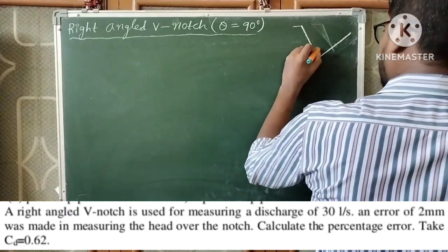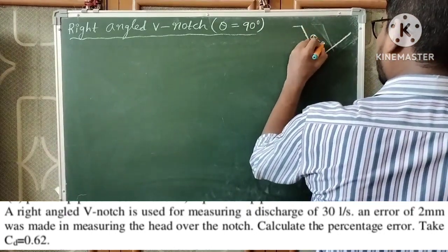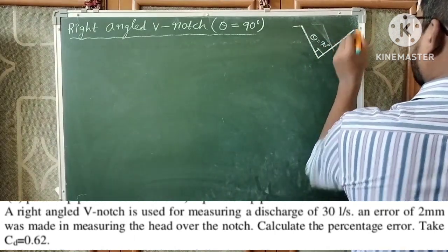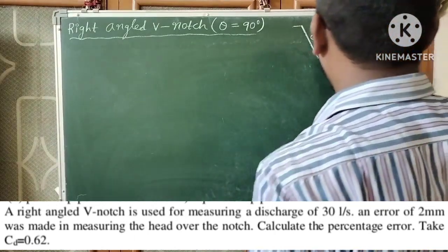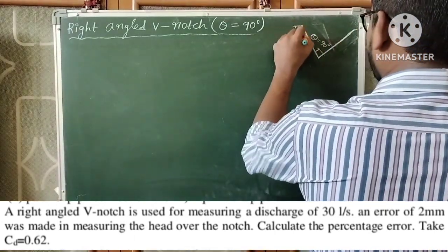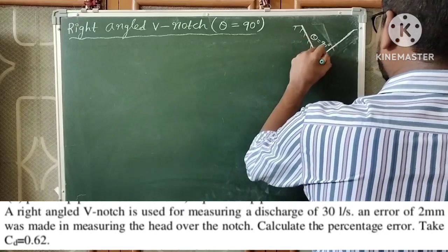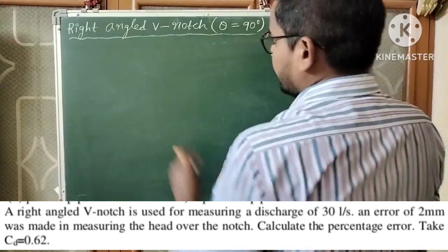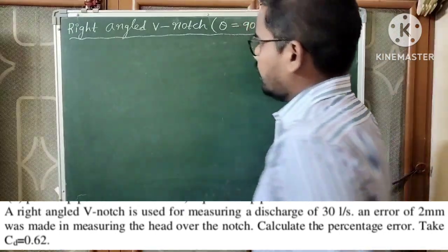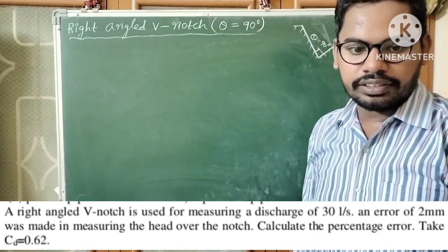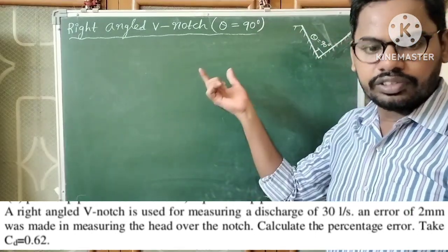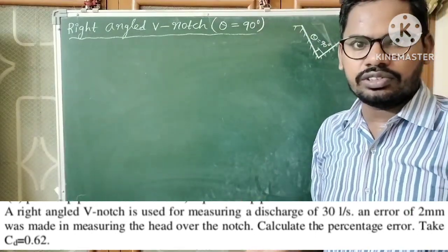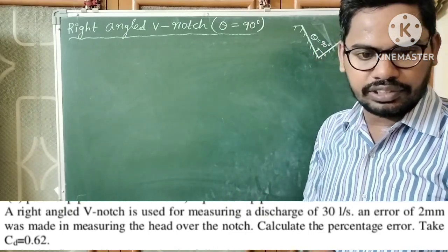Theta is exactly equal to 90 degrees — this is a right-angled V-notch. Here is a rough diagram. The right-angled V-notch is used for measuring discharge. Notches are generally used for measuring the rate of flow or discharge.